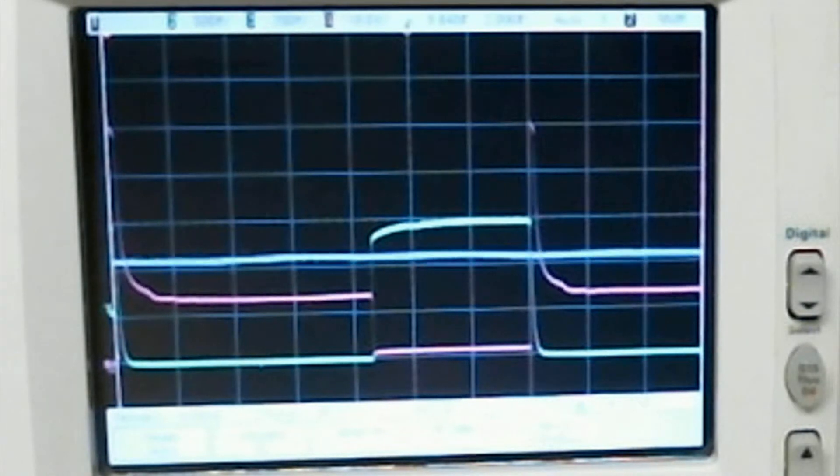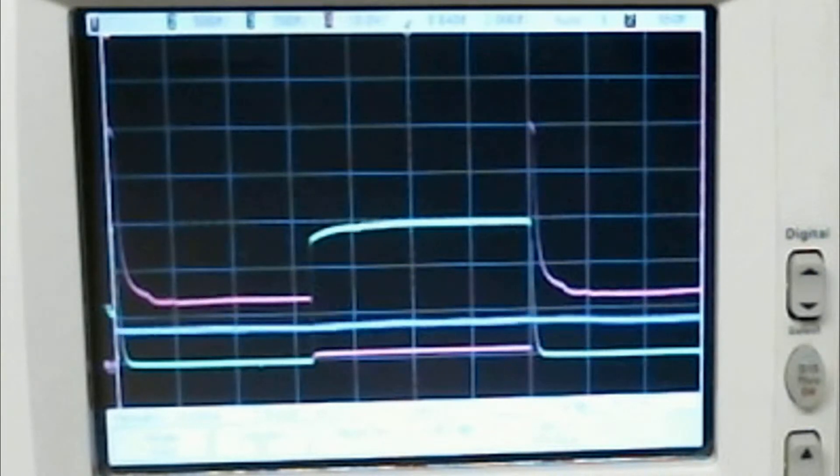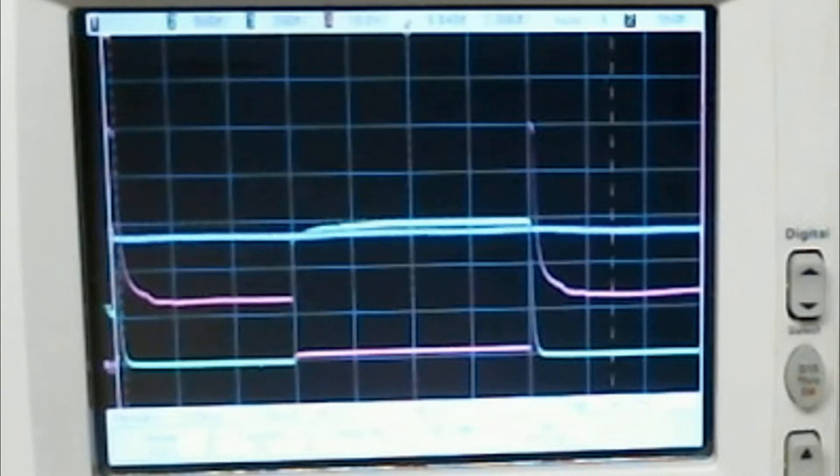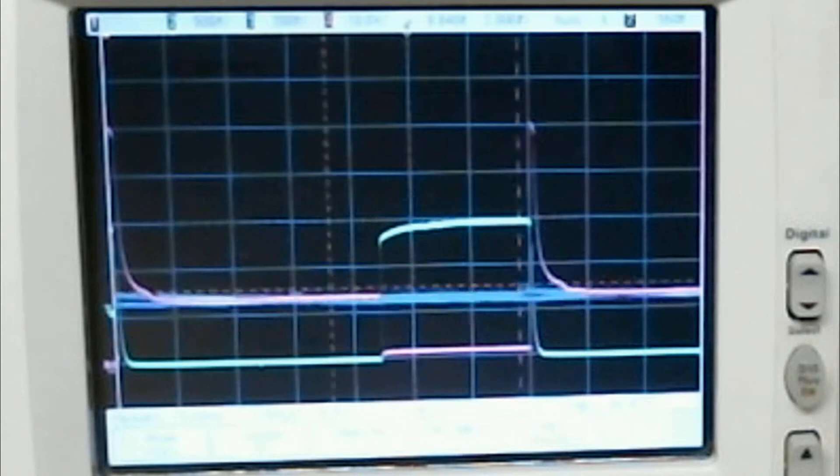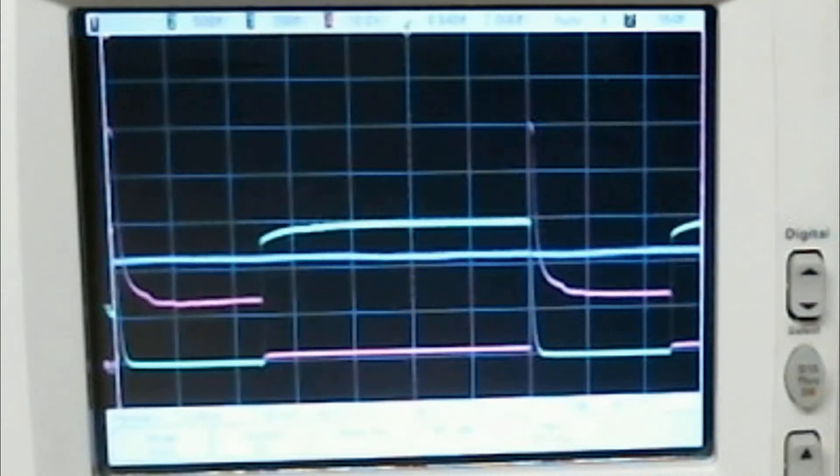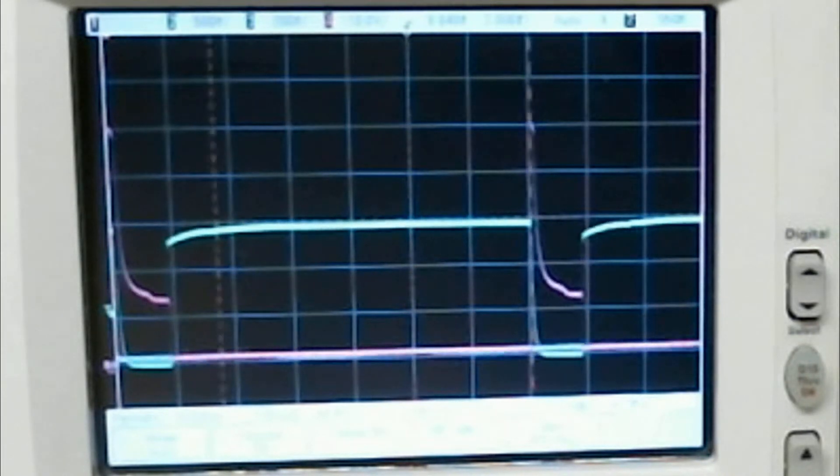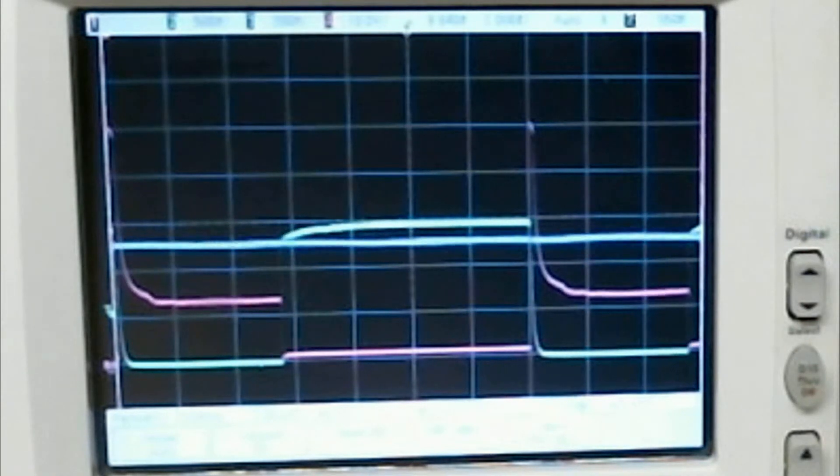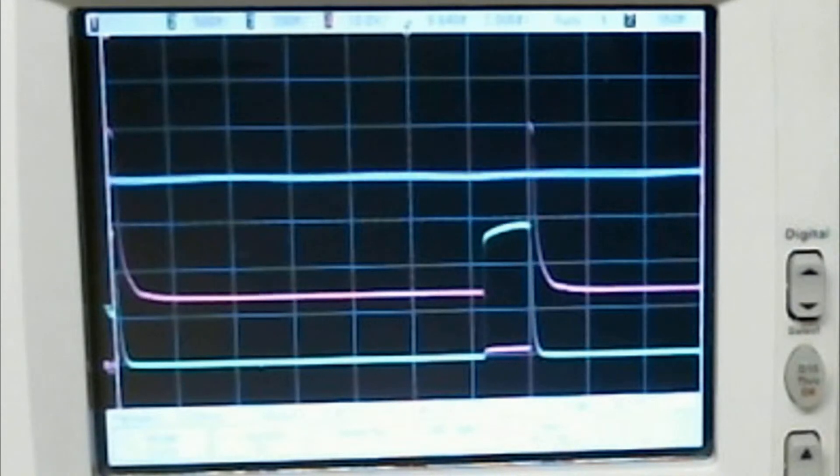By adjusting the oxygen sensor signal, as you can see, the unit responds by adjusting the duty cycle of the output. A lean condition enriches the output, and a rich condition causes the device to go to the lean side.